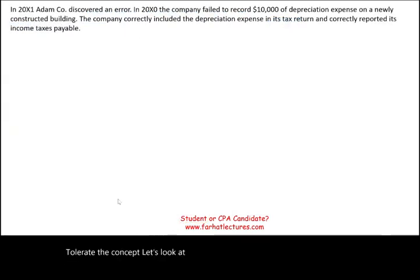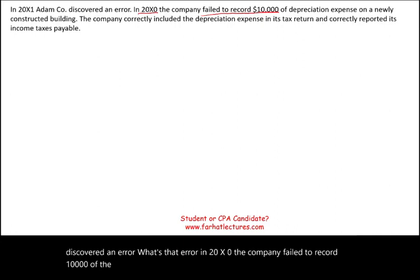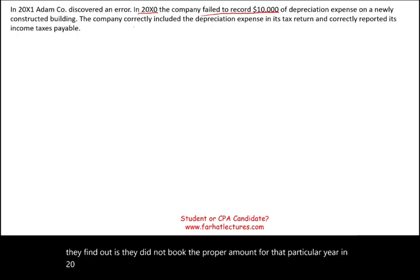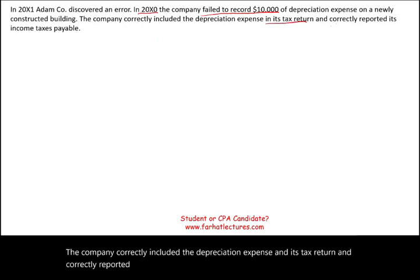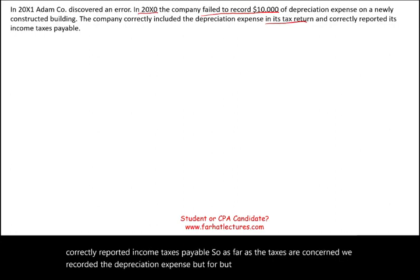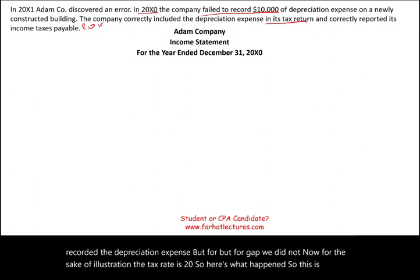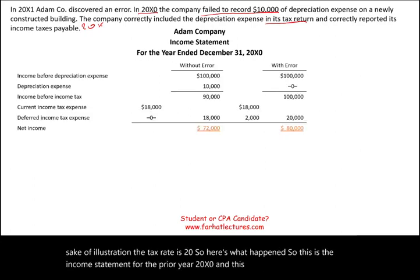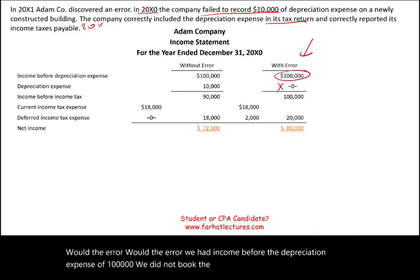In 20X1, Adam Company discovered an error: in 20X0, the company failed to record $10,000 of depreciation expense on a newly constructed building. The company correctly included the depreciation expense in its tax return and correctly reported income taxes payable. So for tax purposes, the depreciation was recorded, but for GAAP, it was not. For illustration, the tax rate is 20%.